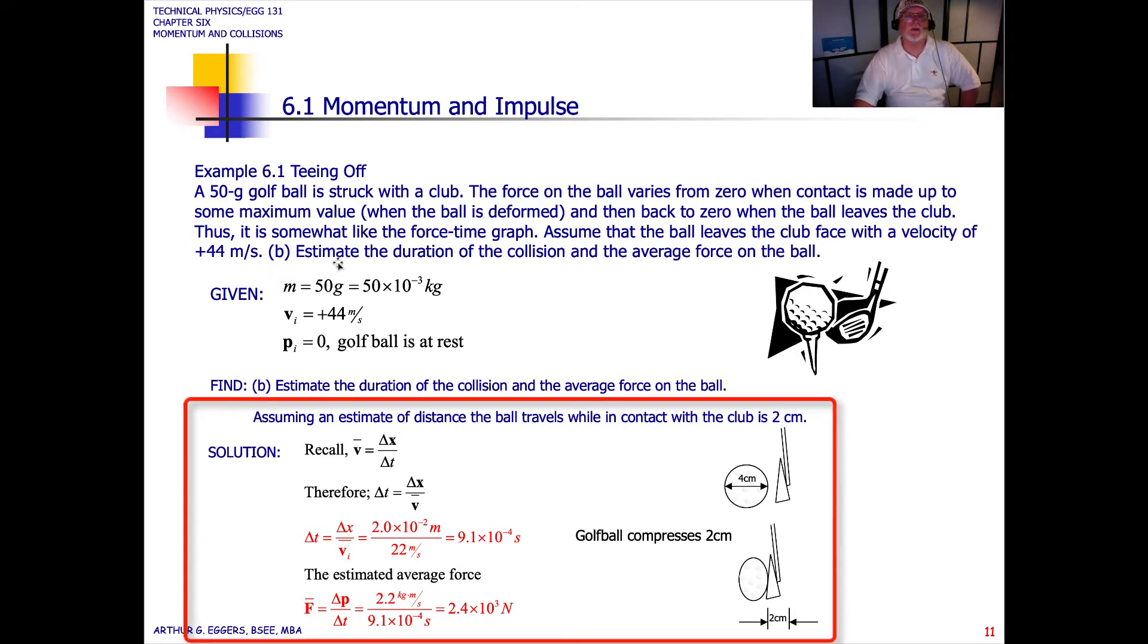The next part of the problem says estimate the duration of the collision and the average force on the ball. This is where you start thinking about that bell curve. Think about what that bell curve was doing as the force increased to some maximum and then decreased, and we had all that area under the curve. Now, in doing this, assuming an estimate of distance the ball travels while in contact with the club is 2 centimeters. We're going to estimate that due to the compression that occurs when that golf club hits the ball, that we have the ball compress about 2 centimeters.